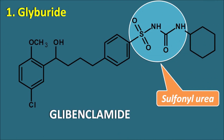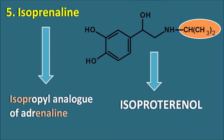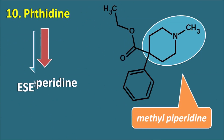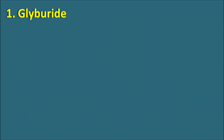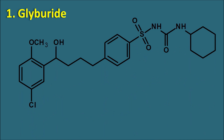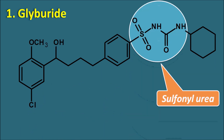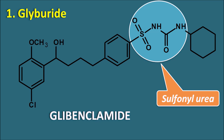Let us start one by one. The first one is glyburide. Glyburide is having the structure like this and we can observe one of the important functional groups — it is a sulfonylurea derivative. Glyburide is a second generation sulfonylurea, and this drug can also be called as glibenclamide. This drug acts by release of insulin from the beta cells by inhibiting the potassium channels, producing depolarization of the beta cells leading to release of insulin.